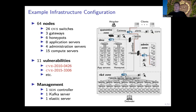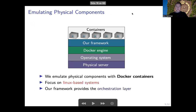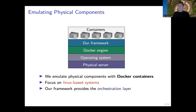The input to our framework is the configuration of the target infrastructure. Here's an example of such a configuration: a bunch of servers, some services, and some vulnerabilities — a typical IT infrastructure. The first step in creating a twin of an infrastructure like this is that we have to emulate the physical components, namely the servers, the switches, and the gateways. We do this using virtual containers — we map each physical component to a container and run software inside to emulate the functionality of the node. For example, if the physical node is a web server, we'll run the web server inside the container.